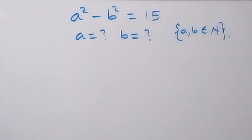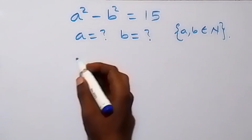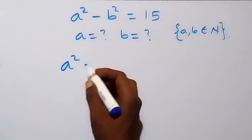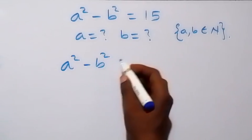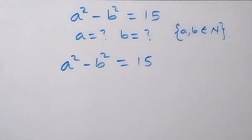Hello, you are welcome to solve this nice algebra problem: a squared minus b squared equals 15. We need to find the value of a and b, where a and b are natural numbers.